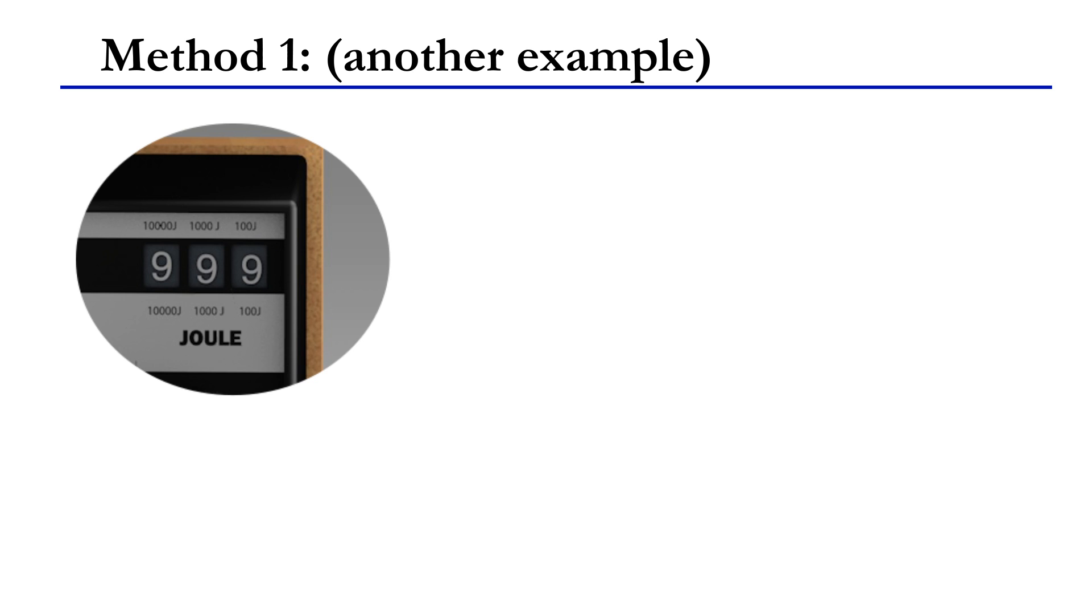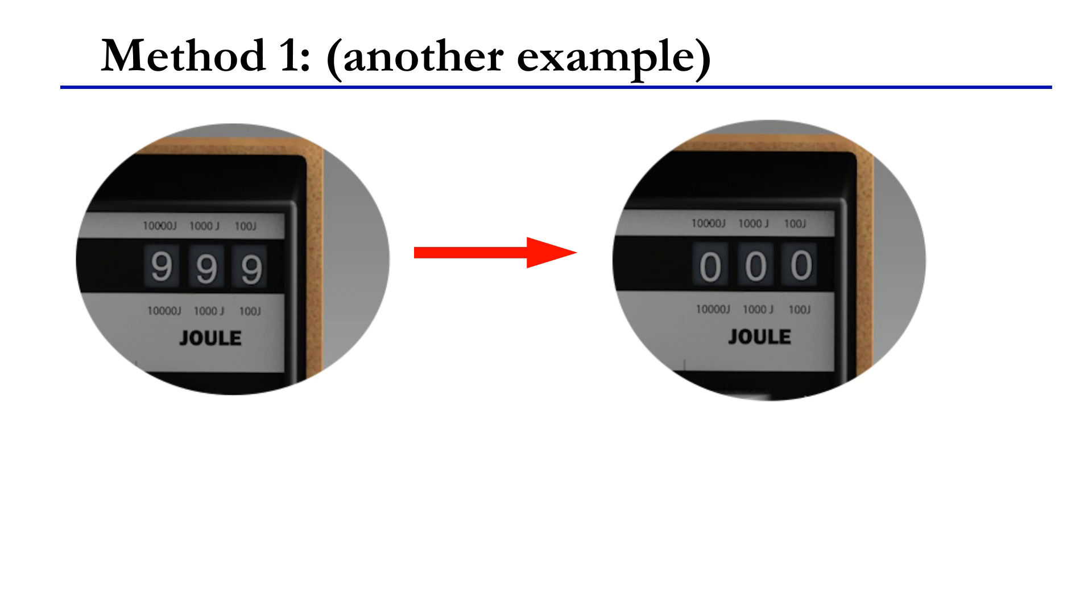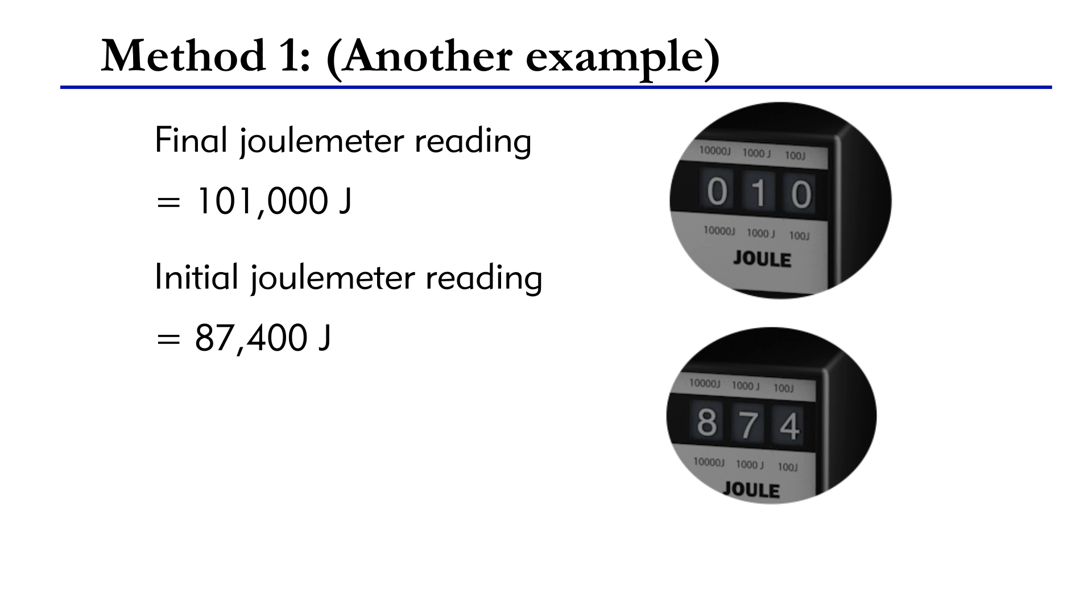if the number reaches 999, the next one will be 000. In such a case, we must add 1 to the left side of the final reading before we do the subtraction. In our example, the final reading should be 101,000 joules. The subtraction is 101,000 minus 87,400 joules. And the heat transfer is 13,600 joules.